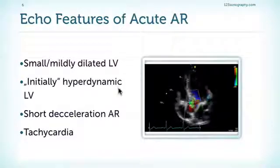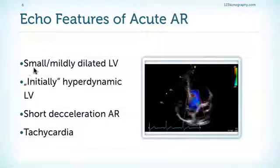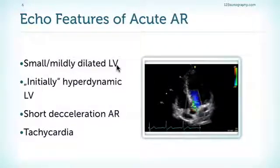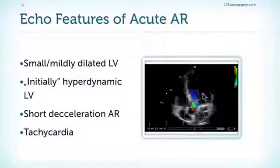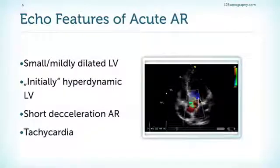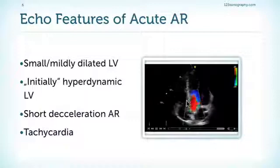What are the echo features of acute aortic regurgitation? As already mentioned, we have a small or only mildly dilated left ventricle. The left ventricle function is hyperdynamic to compensate, at least initially. And then finally, if the ventricle fails, ventricular function becomes more normal and then finally reduced.